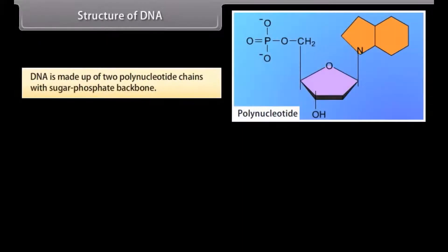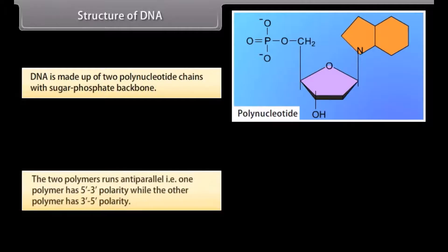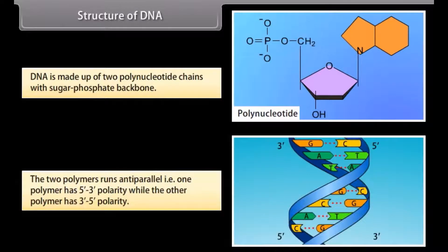DNA is made up of two polynucleotide chains with a sugar-phosphate backbone. The two polymers run anti-parallel — that is, one polymer has 5' to 3' polarity while the other polymer has 3' to 5' polarity.